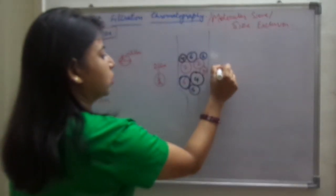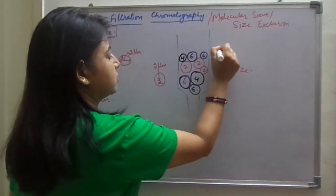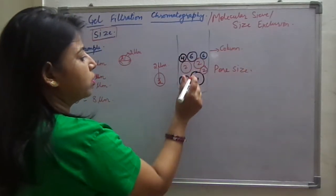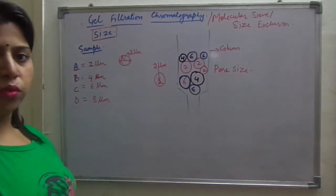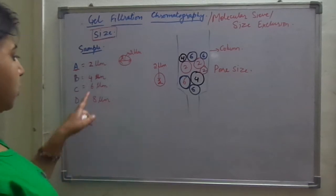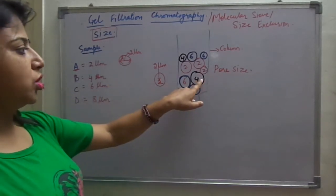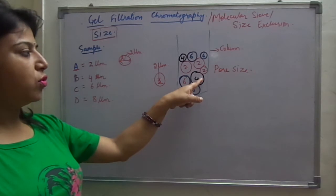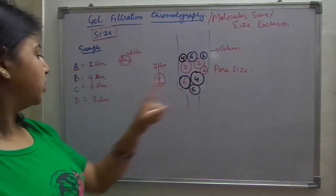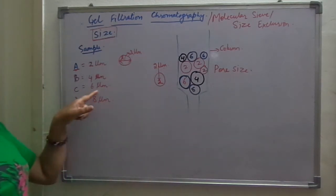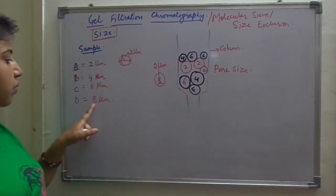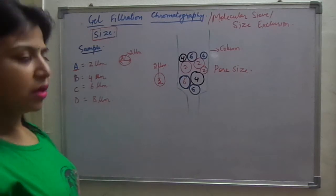I am talking about the word pore size and this is the column. The bead is written 4, so 4 micrometre component, obviously 2 micrometre component can also enter. But the 6 micrometre component will be larger and won't be able to enter 4 micrometre bead. Coming to this 6 micrometre bead, so 6 micrometre, that is C can enter, B can enter this bead, A can enter this bead, but D won't be able to enter this bead.